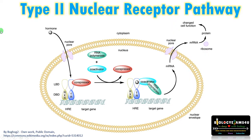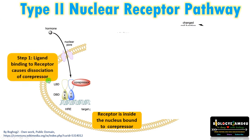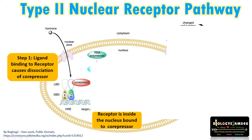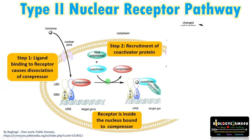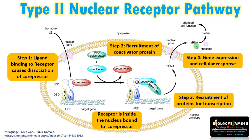Now let us understand the type 2 nuclear receptor pathway. In this pathway, the receptor is inside the nucleus and is bound to a core repressor. Step 1: ligand binding to the receptor causes dissociation of the core repressor. Step 2: coactivator proteins are recruited along with RNA polymerase. All the proteins required for transcription assemble at the site, causing transcription of downstream genes, leading to mRNA formation, protein synthesis, and altered cellular response.